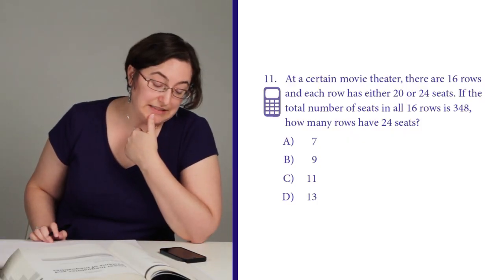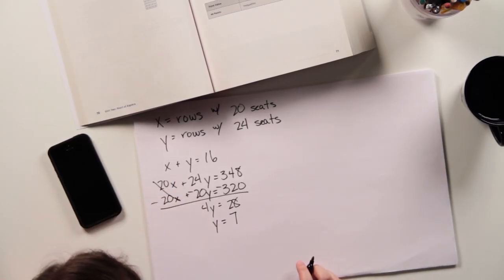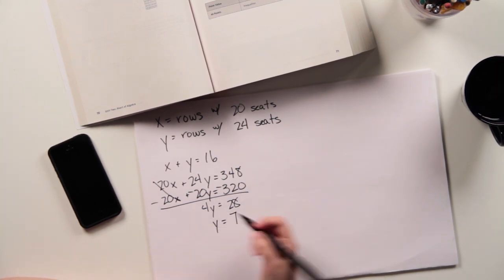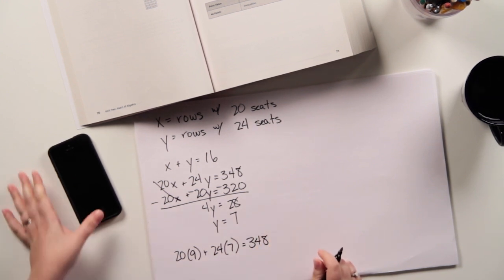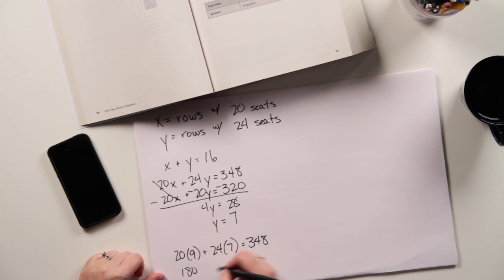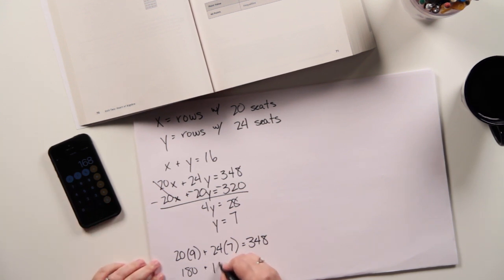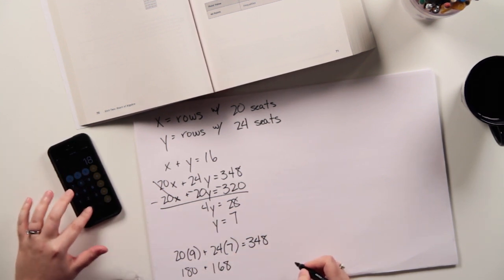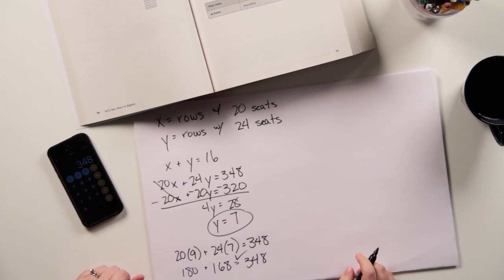Now, that's answer choice A. And I can check my work if I just plug this right back in and see if it still fits. Then x would equal 9. So if I do 20 times 9 plus 24 times 7, do I get 348? So 20 times 9 is going to be 180. 24 times 7 is 168 plus 180 does in fact give me 348. So this totally works, and 7 is my answer. Awesome.